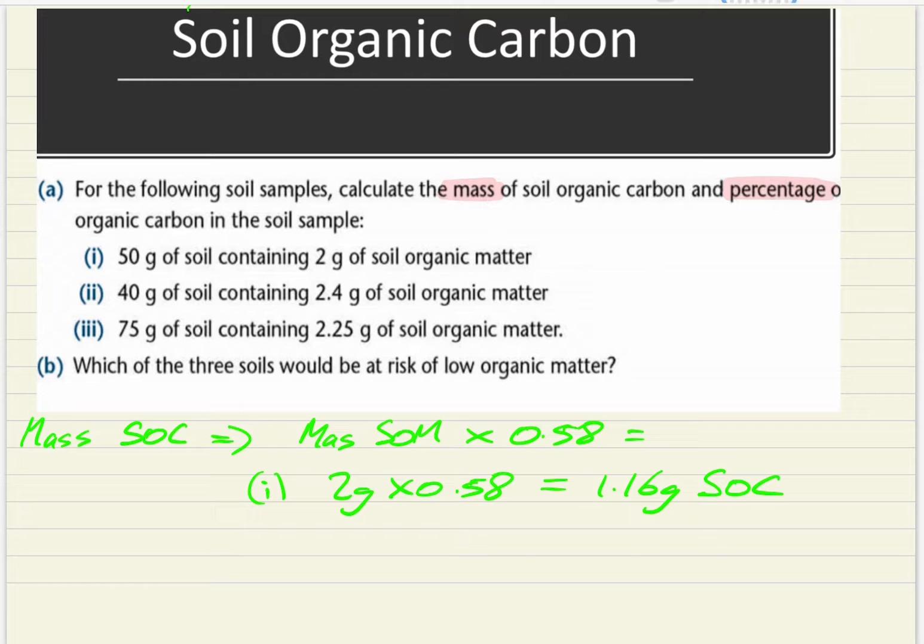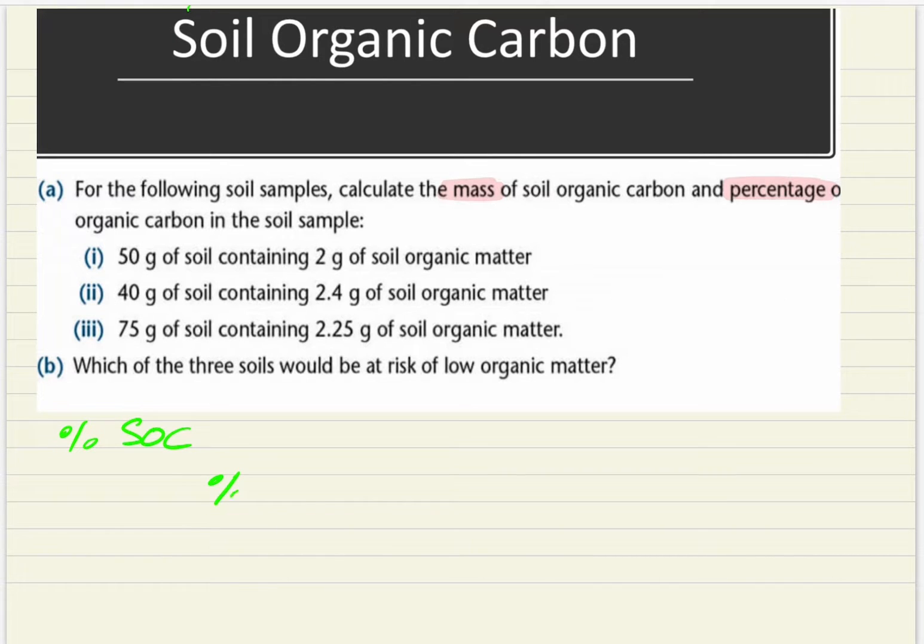If they're asking you for the percentage of soil organic carbon, you have to first of all get the percentage of organic matter. So for part one, you're going to put the mass of soil organic matter over the original sample of soil, multiply it by 100 over 1 to get into a percentage.